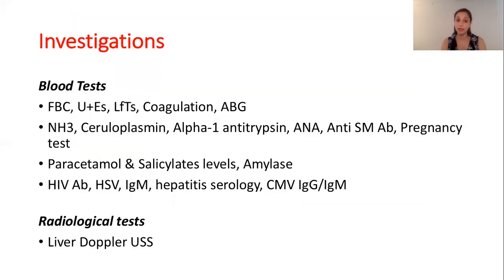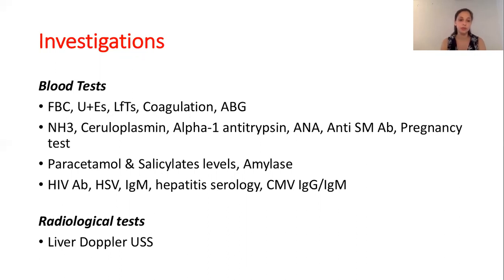It is important to do blood tests. Routine bloods such as full blood count and kidney function are important. LFTs to check transaminase levels, coagulopathy screen, and metabolic acidosis on ABGs. It is important to check ammonia levels as well as ceruloplasmin, particularly if the patient has Wilson's disease. An autoimmune screen such as ANA and smooth muscle antibodies, a pregnancy test if concerned, paracetamol and salicylate levels — as you can treat with N-acetylcysteine very easily — and amylase levels.